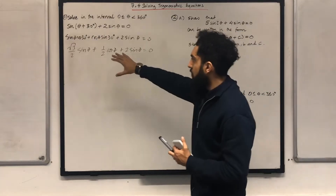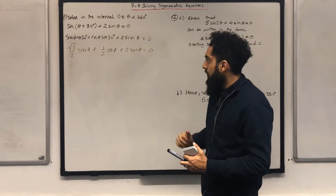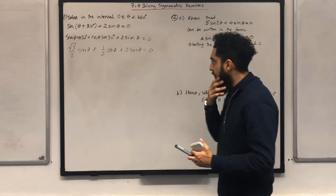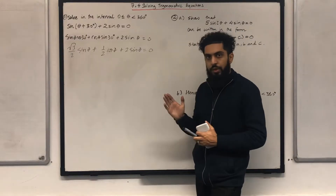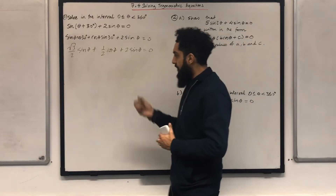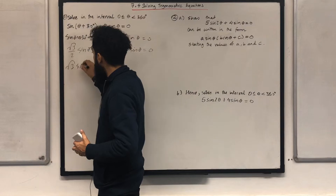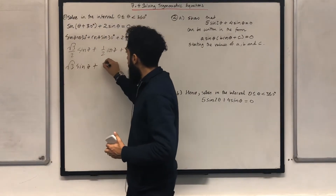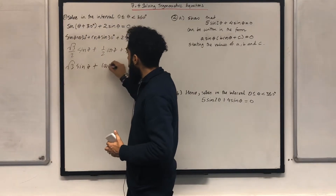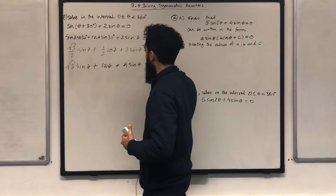I can make this equation look even more beautiful. What I can do is multiply each of the terms in this equation by 2. If I do that, I obtain square root 3 sine theta plus cos theta plus 4 sine theta equal to 0.